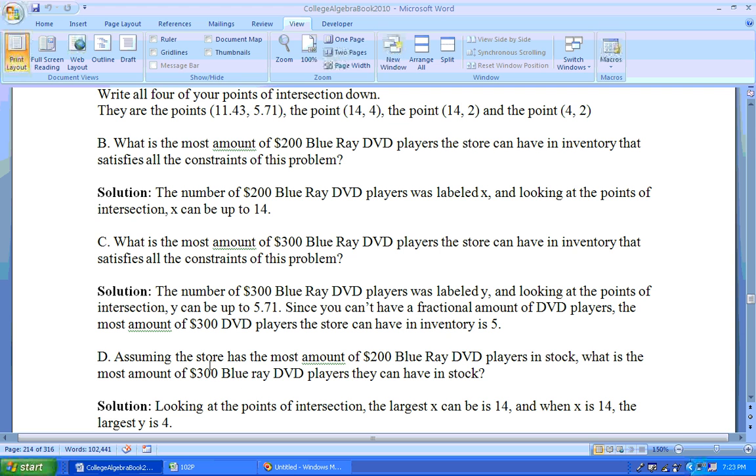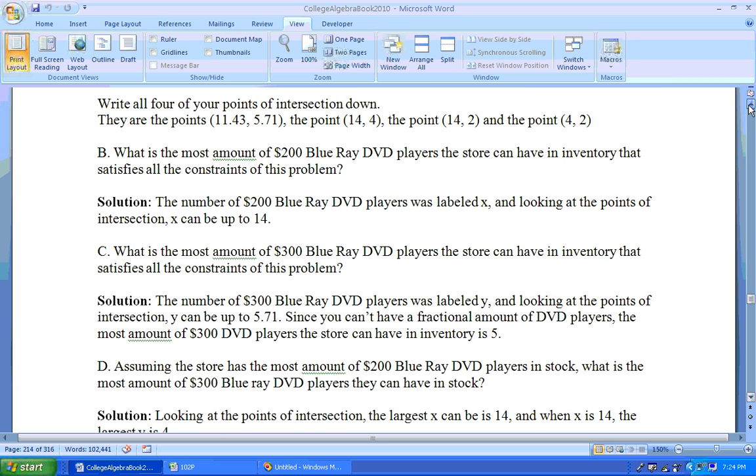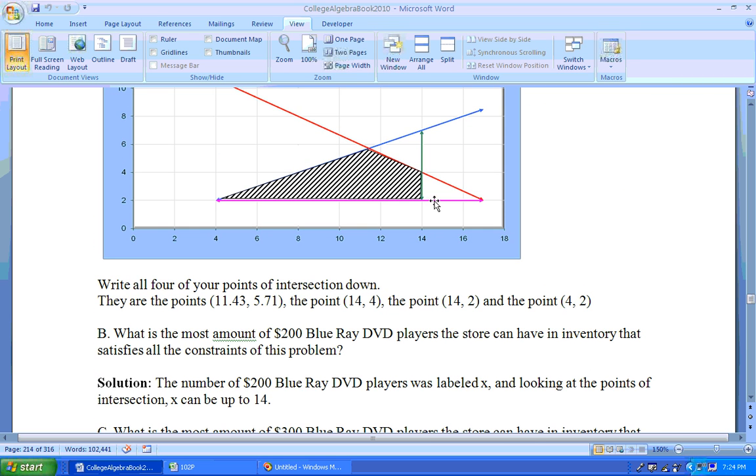Now this one says, assuming the store has the most amount of $200 Blu-ray DVD players, that's assuming x is as large as possible. What is the most amount that the y could be? The $300 Blu-ray DVD players. Well, the most the x could be is right here, 14. If that's up to 14, how big can the y be? Right here.